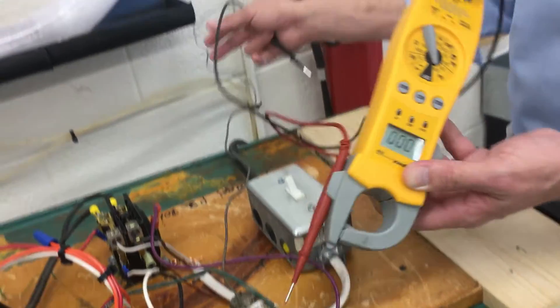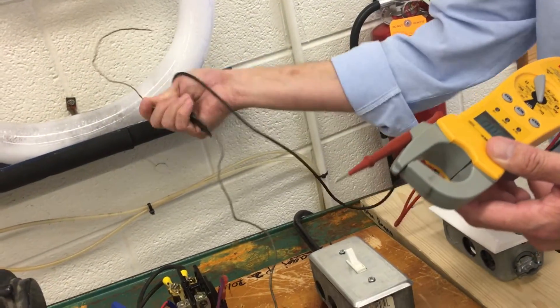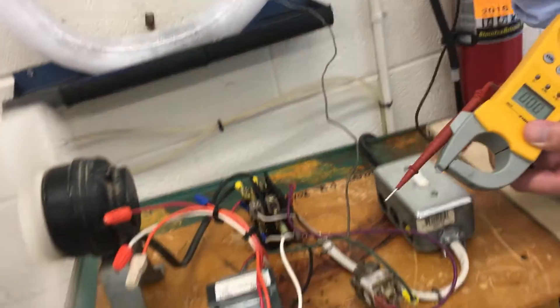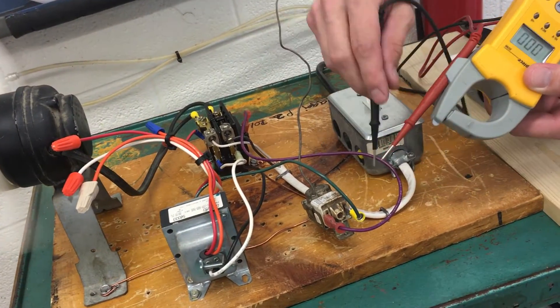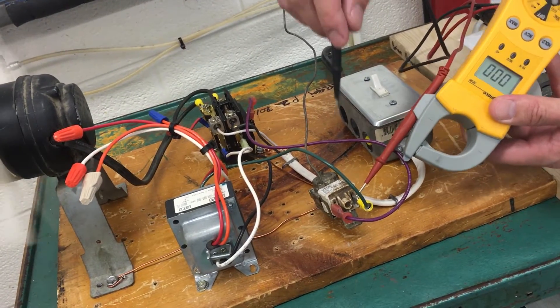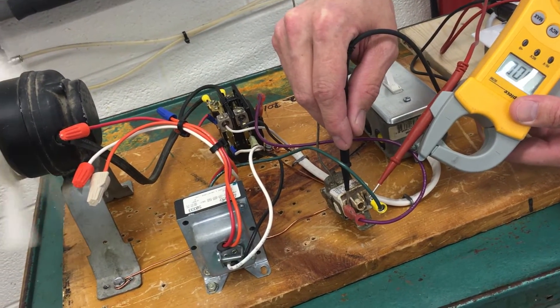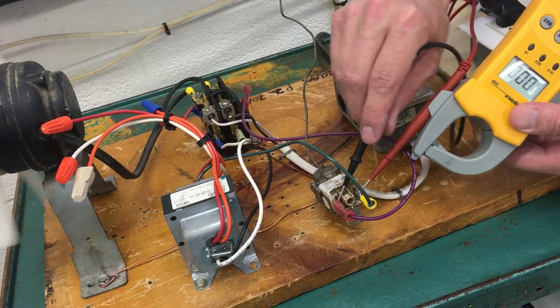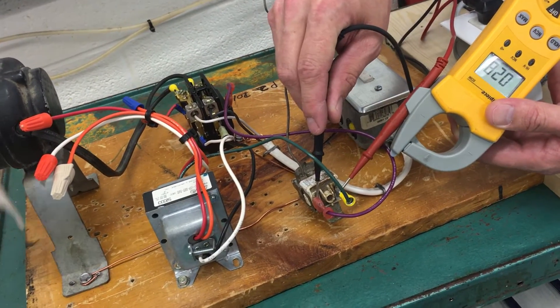If I wait until the thermostat satisfies, then I can measure it again, and we can measure the difference in potential because now we're reading through this coil and all the way back to the transformer on the one side. And it will still show, it should still show 24 volts. There it is, 27 volts.